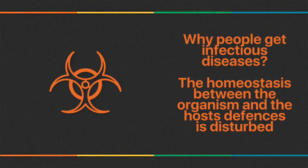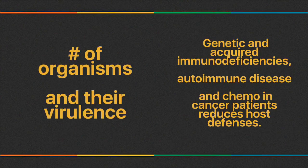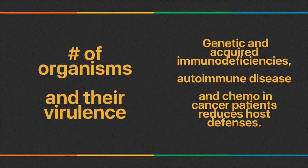People get infectious diseases because the homeostasis between the organism and the host defenses is disturbed — the bug becomes stronger than your immune system. Two determinants in overpowering the host are: number one, the number of infecting organisms, and number two, the virulence of those organisms, which is determined by the organism's ability to produce various virulence factors.